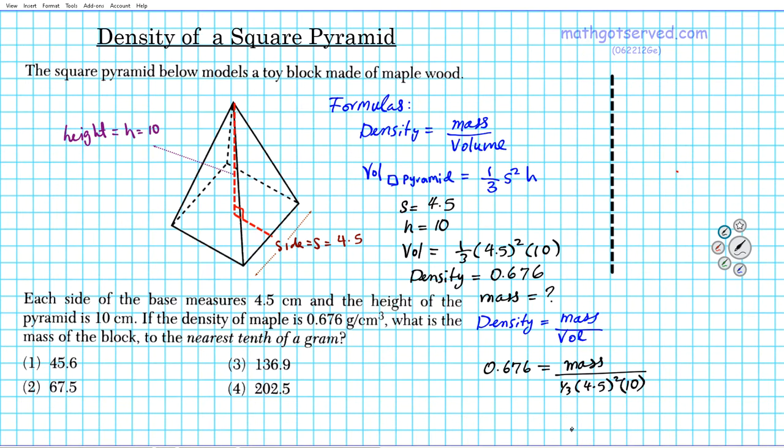Now to get the mass by itself, we're going to multiply both sides by this number. So you can work out this number or just leave it alone. I'm just going to leave it alone. So I'm going to multiply both sides by 1/3 times 4.5 squared times 10.